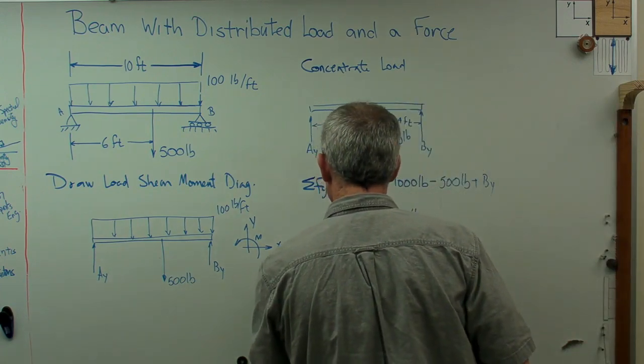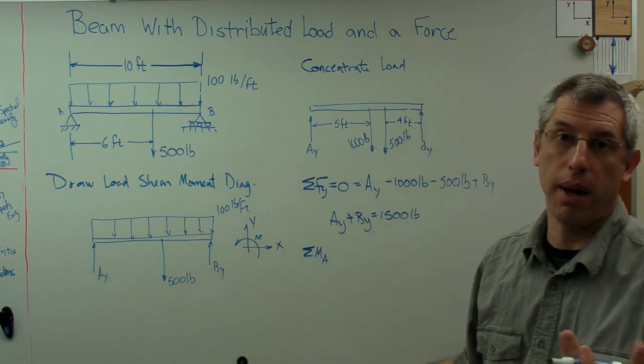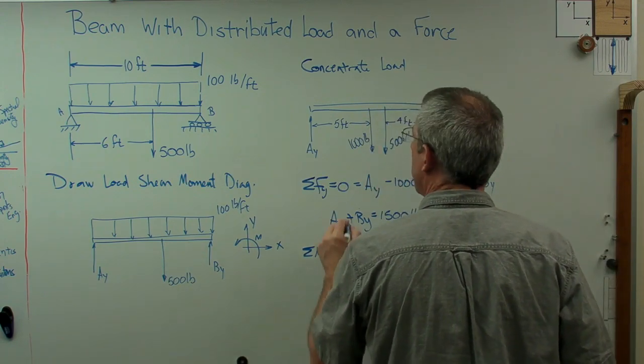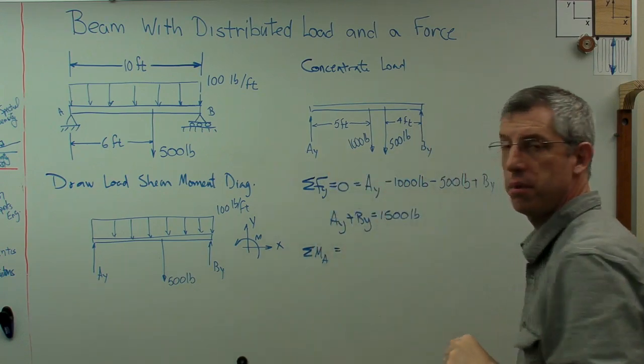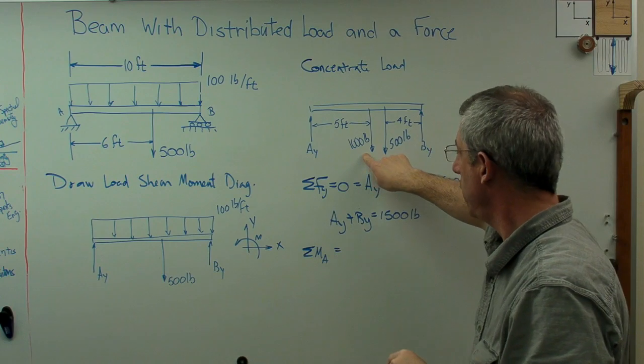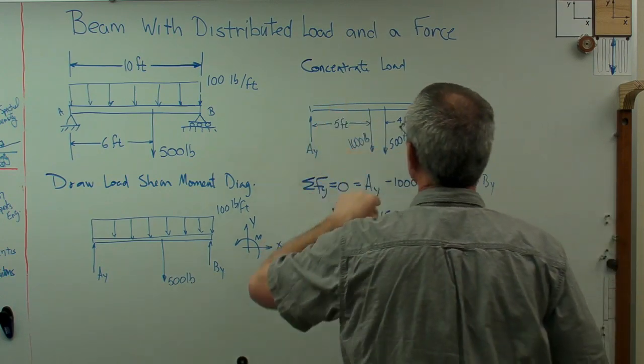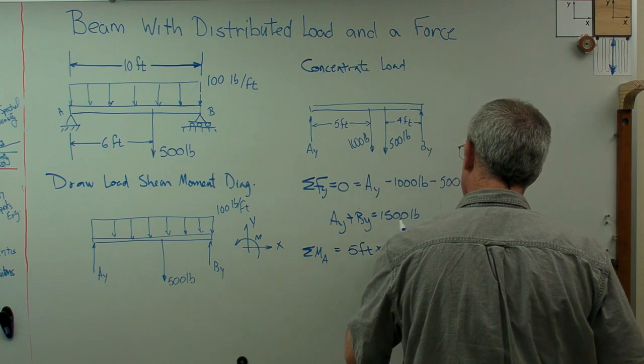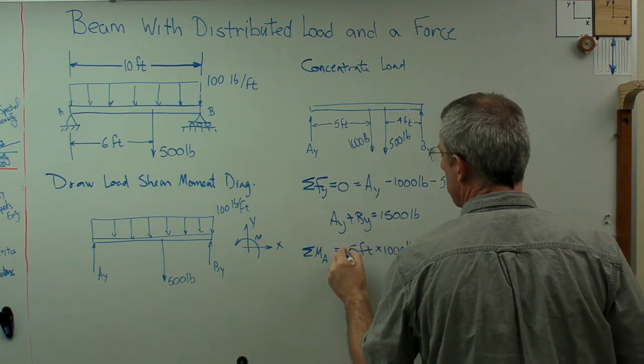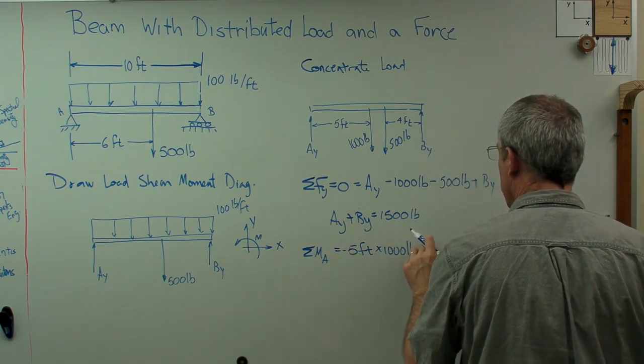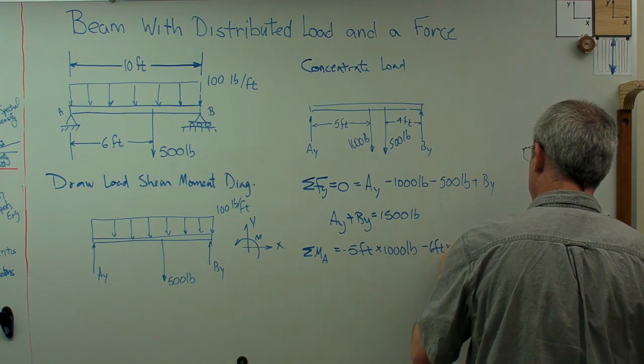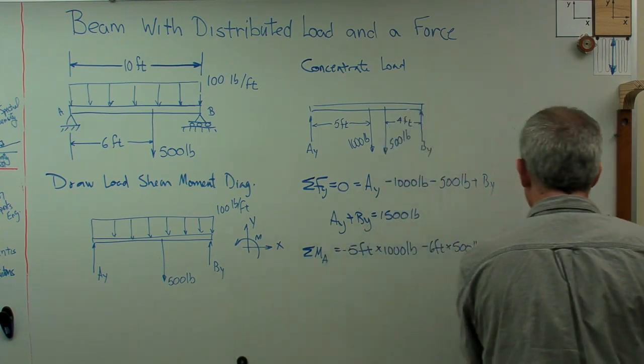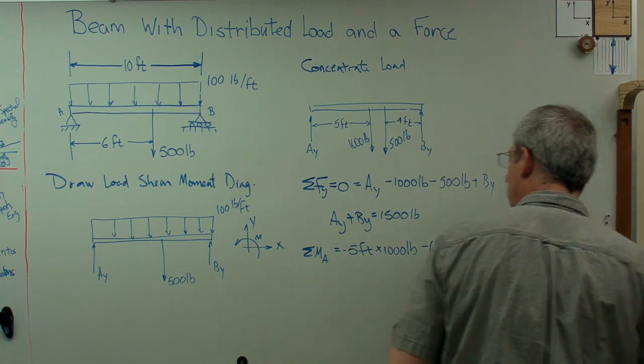Next thing we've got to do is we've got to sum the moments. We can sum the moments anywhere we want. I'm going to sum about A just so I can get rid of that force, and I'll just solve for the other one here. Alright, so let's see. Now, remember directions here, the positive and negative moments here. A positive moment goes in the counterclockwise direction. This is going to go clockwise and do that 1,000 pounds. So I'm going to have 5 feet times 1,000 pounds minus 6 feet times 500 pounds plus 10 feet times B_Y.